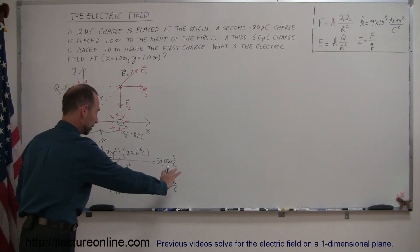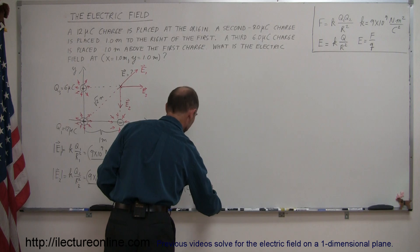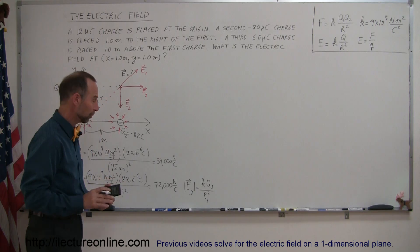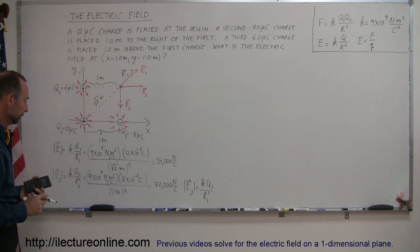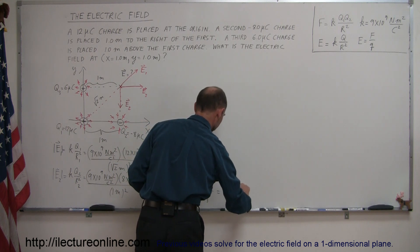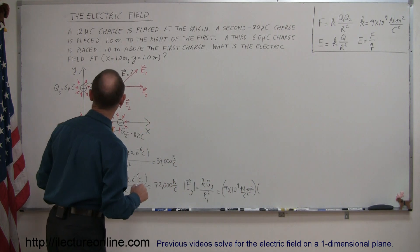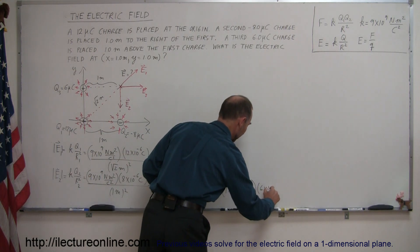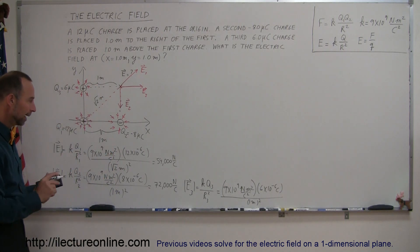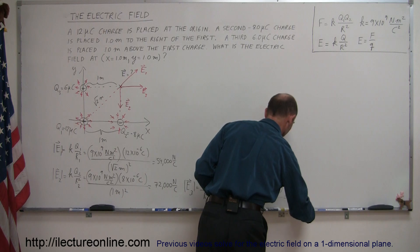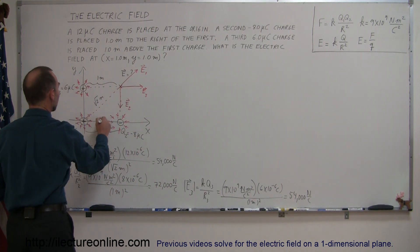We need the magnitude of E3. E3 equals k times q3 divided by r3 squared, where r3 is the distance between q3 and the point of interest — that's 1 meter. Plugging in the numbers: 9×10⁹ N·m²/C² times 6×10⁻⁶ C divided by 1 meter squared. Since 6 times 9 is 54, that gives us 54,000 newtons per coulomb. We now have the magnitudes of all three electric fields at this location due to the presence of these three charges.